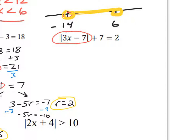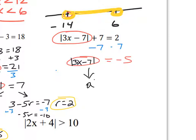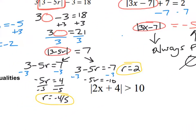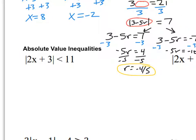In the next problem, there's stuff outside my absolute value bars, so I need to isolate them first. I subtract 7 and get that the blob equals negative 5. But think about it: the blob is the absolute value of 3x minus 7, and absolute value is always going to be positive. So there's no way for something always positive to equal negative 5. There's no solution. When doing absolute value equations and you get a negative on the right side once isolated, it's always no solution.